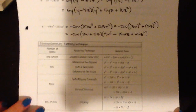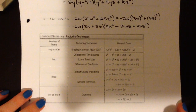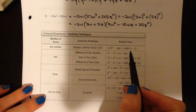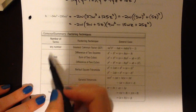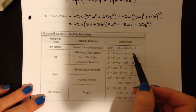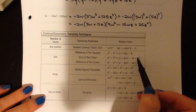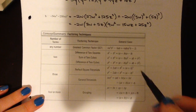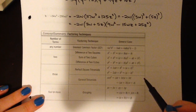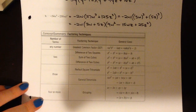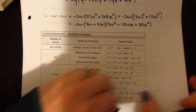Here are some factoring techniques — some we've talked about, some we haven't. We've talked about doing a GCF as a very important first step. When there are 2 terms, we have a number of things we could do: the difference of squares we already knew, and the sum and difference of cubes are brand new — you're going to have to memorize these. When you have 3 terms, we've talked about general trinomials. And any time you see 4 or more terms, we're going to factor by grouping.